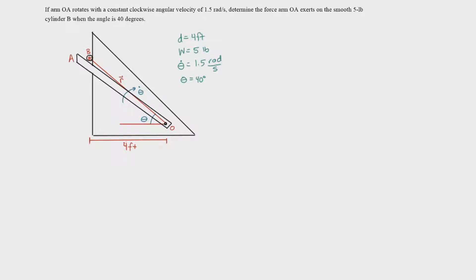Welcome back everybody. Today we're going to be looking at an example that deals with angular velocity. The problem states: if an arm OA rotates with a constant clockwise angular velocity of 1.5 radians per second, determine the force arm OA exerts on the smooth 5-pound cylinder B when the angle is 40 degrees.